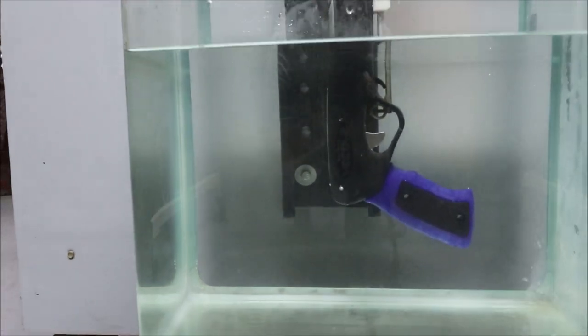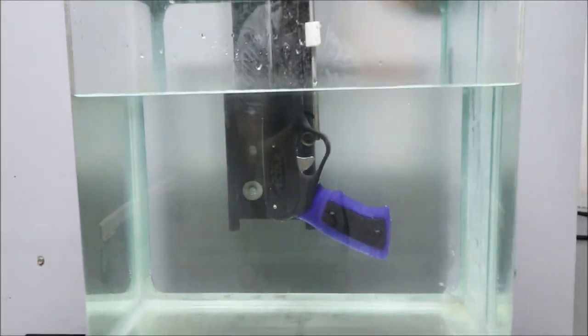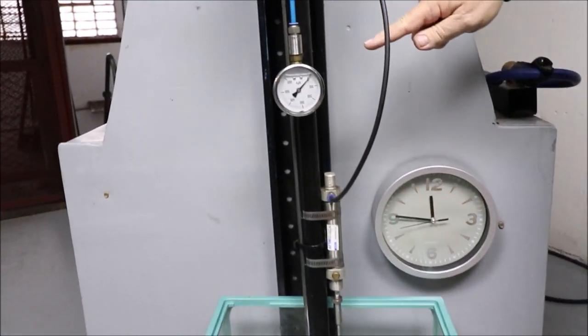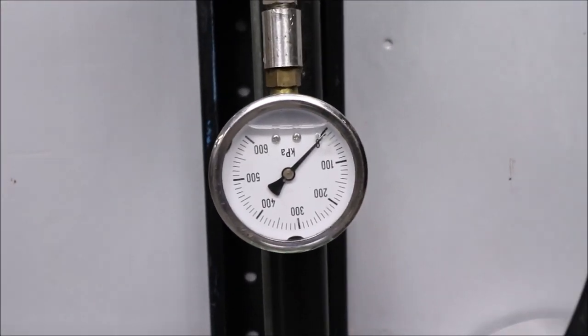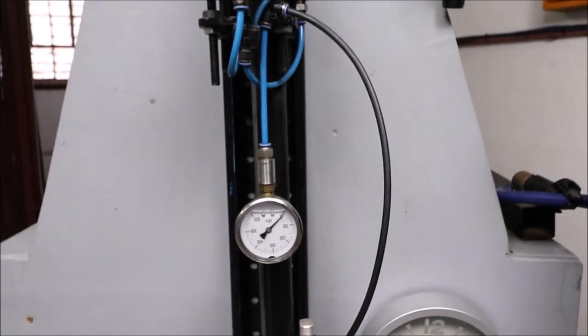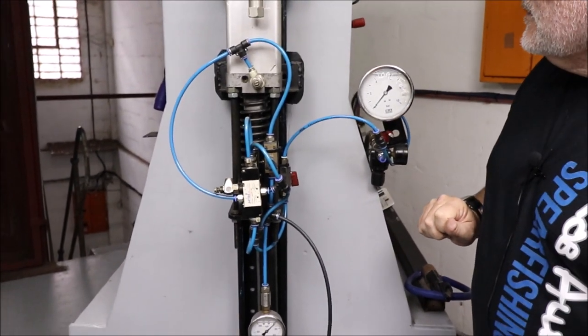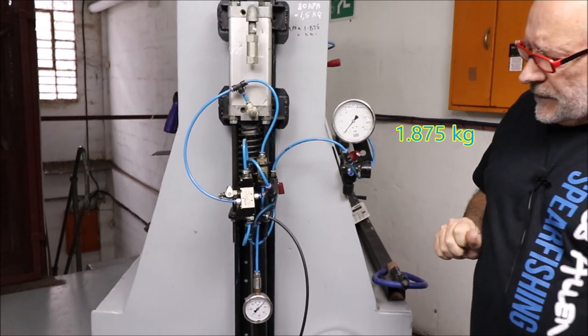That change we can see in kilopascals. Excuse the gauge being upside down, it works best in that position. 100 kilopascals is about, correction, 1.875 bars.